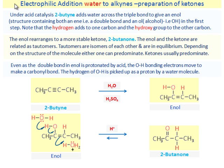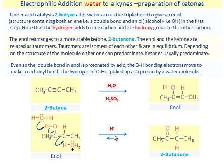Electrophilic addition of water to alkynes — Preparation of ketones. Under acid catalysis, 2-butyne adds water across the triple bond to give an enol. Note that the hydrogen adds to one carbon and the hydroxy group to the other carbon. The enol rearranges to the more stable ketone, butanone. The enol and ketone are related as tautomers — isomers that are in equilibrium with each other. Depending on the structure of the molecule, either can predominate, but ketones usually predominate.